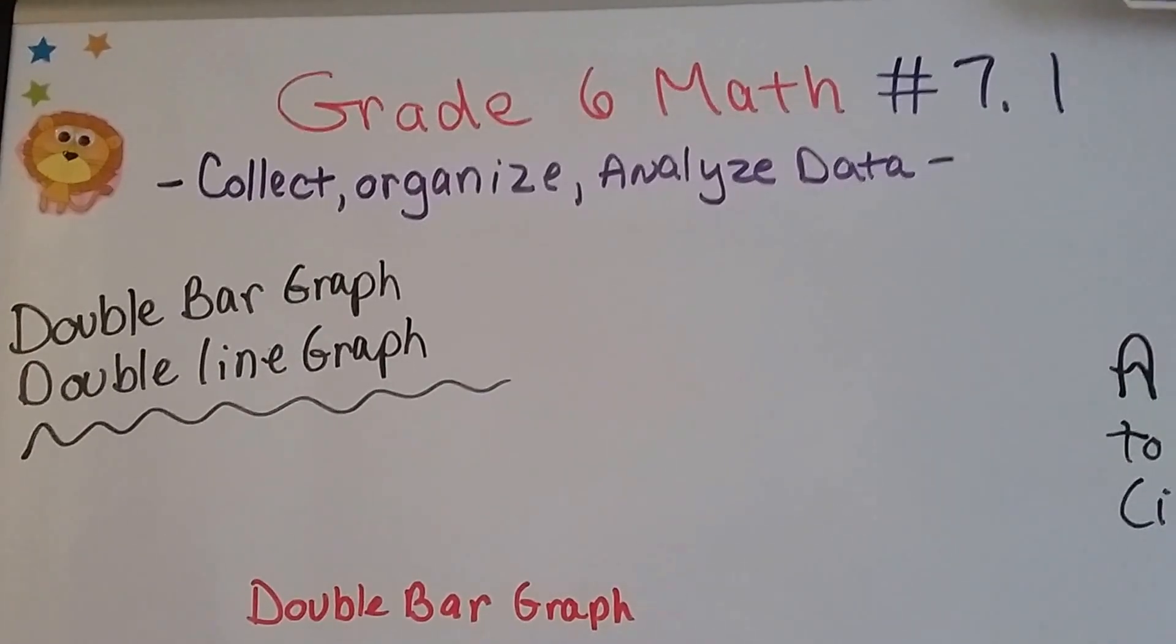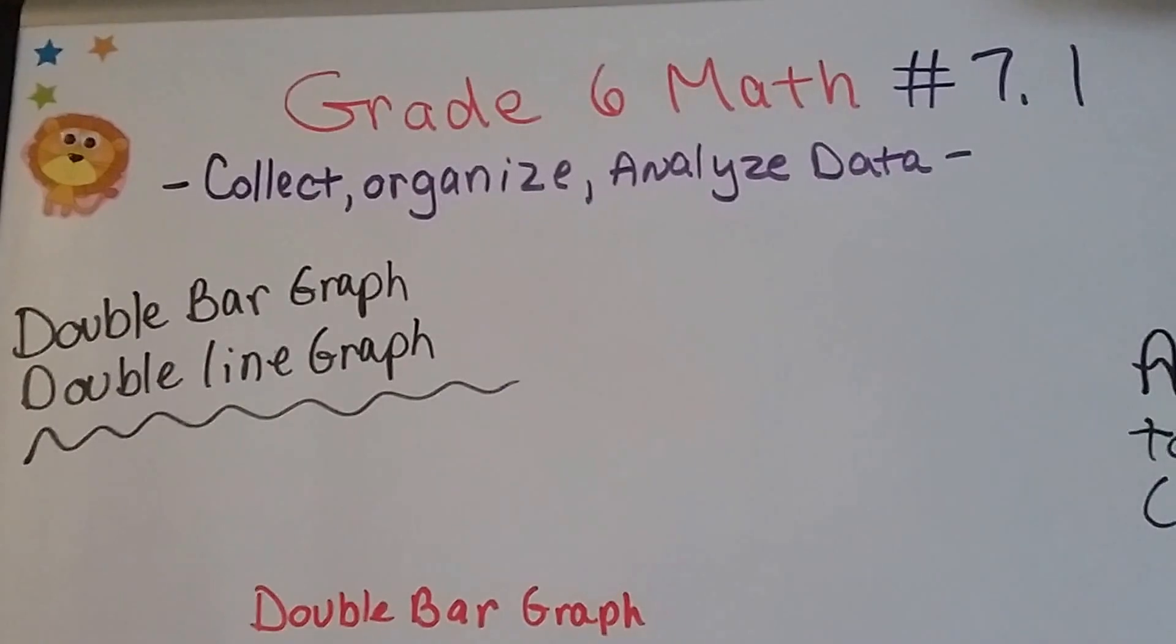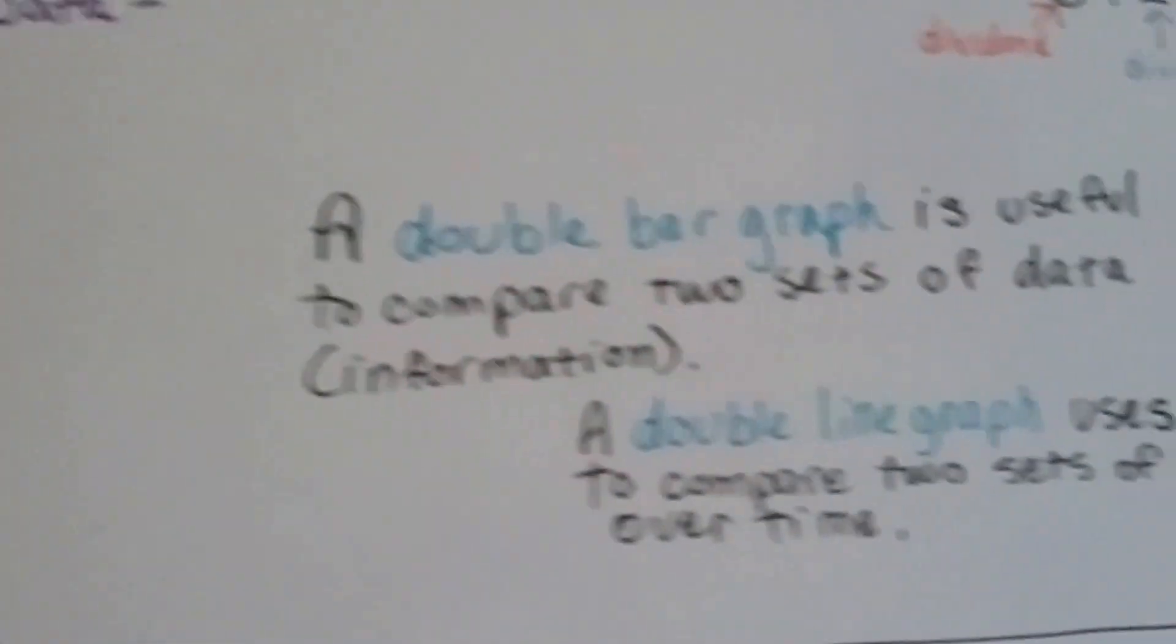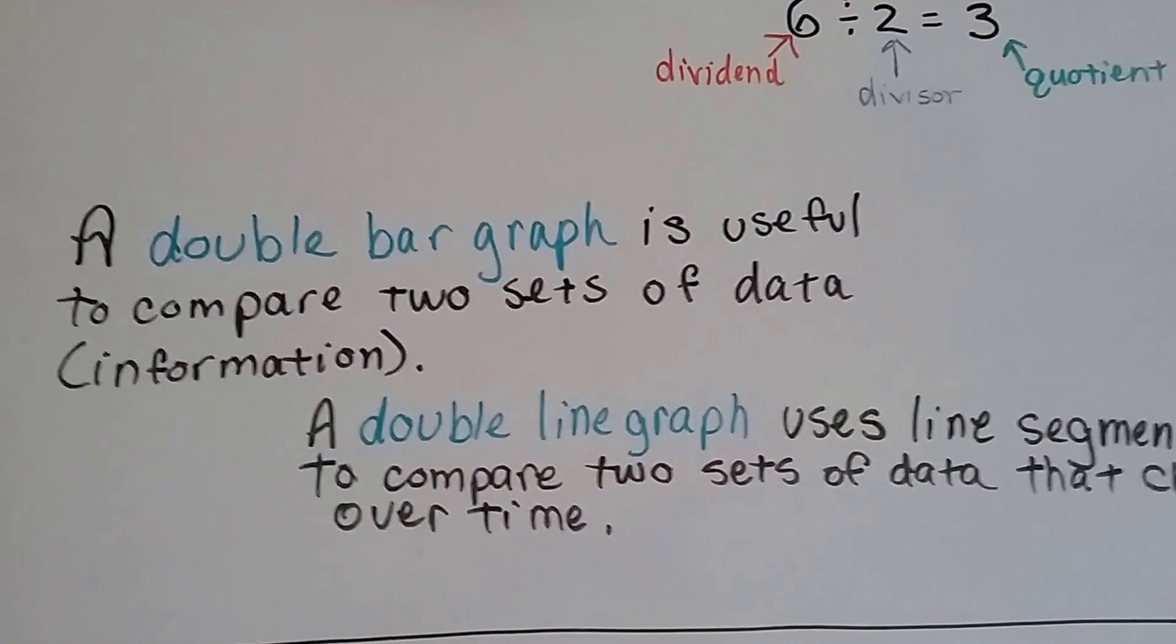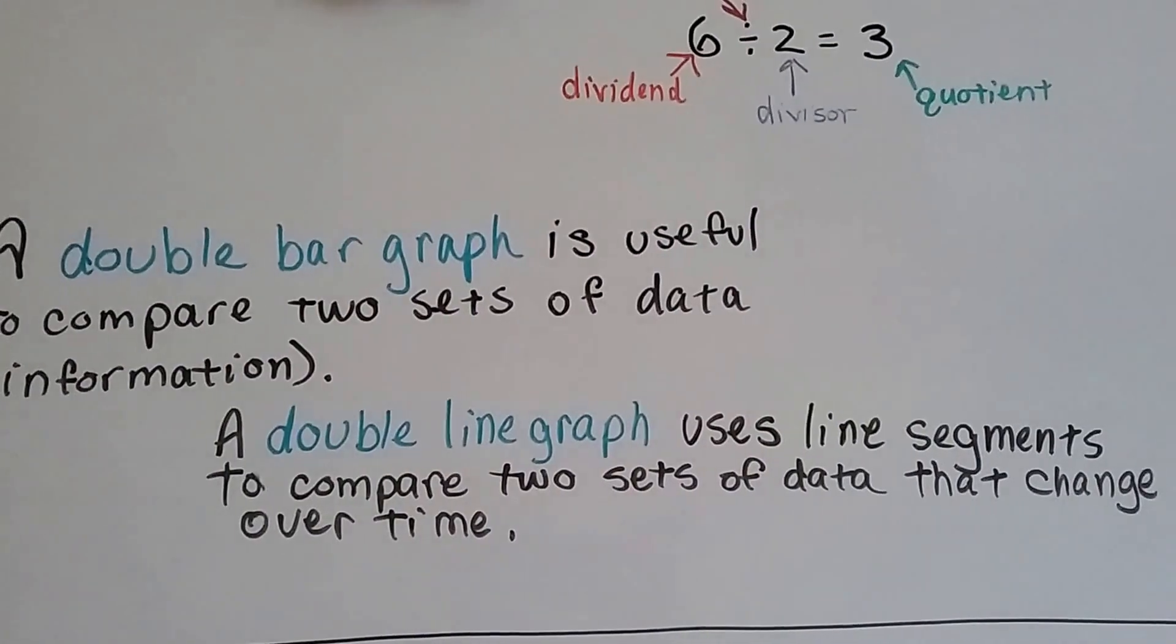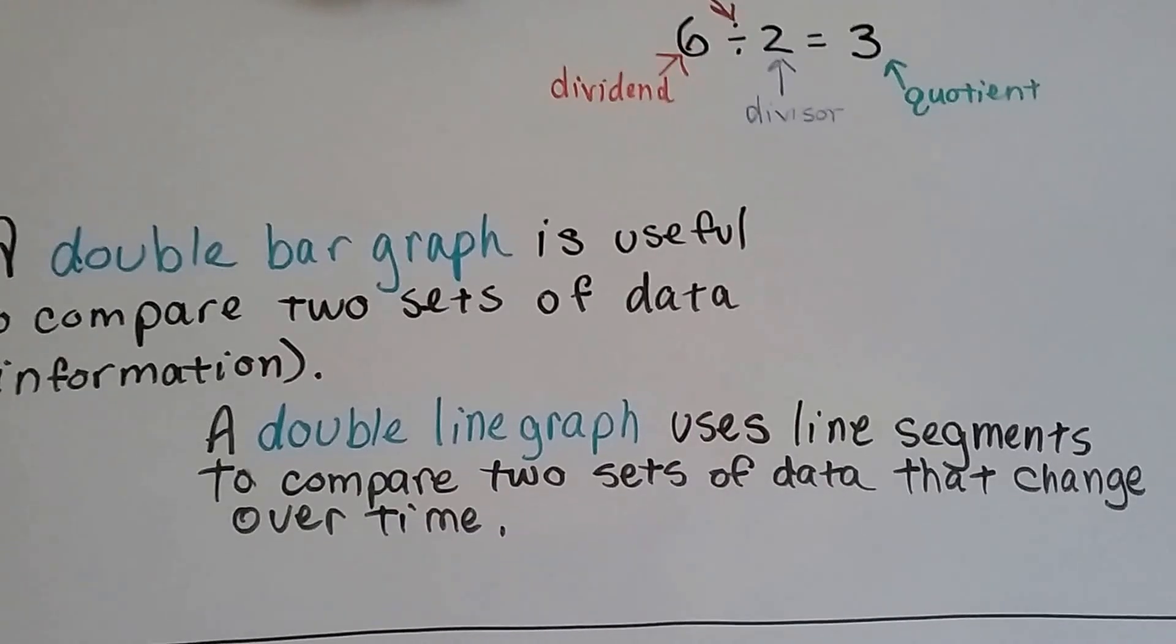Grade 6 math number 7.1: double bar graph and double line graph. A double bar graph is useful to compare two sets of data, and a double line graph uses line segments to compare two sets of data that change over time.